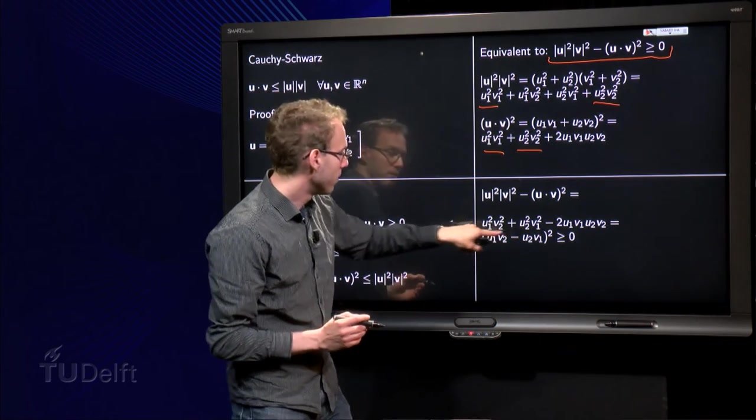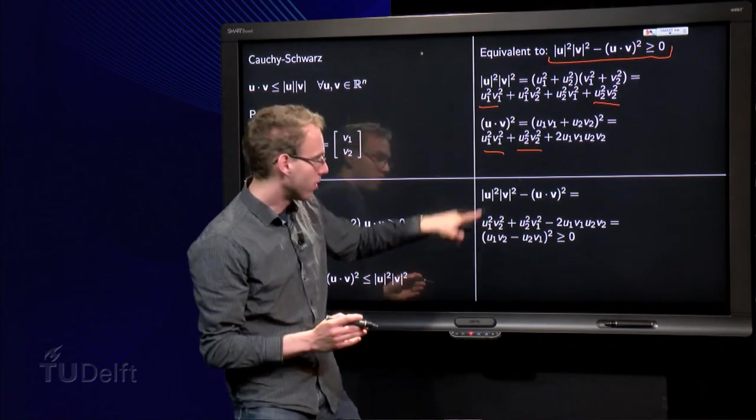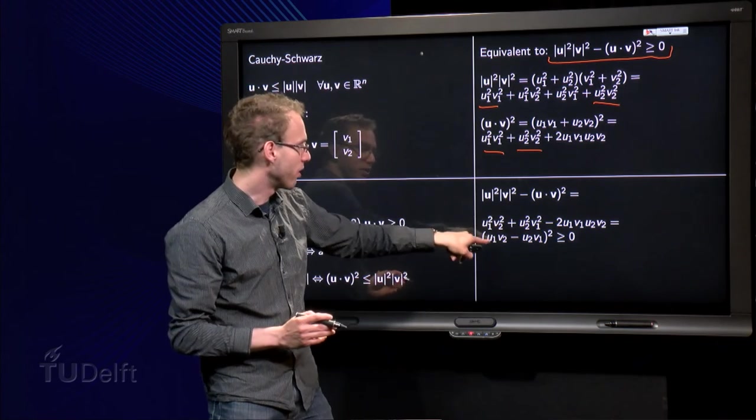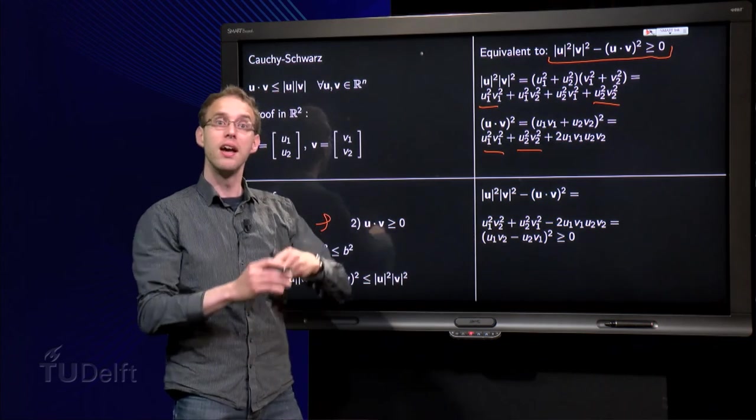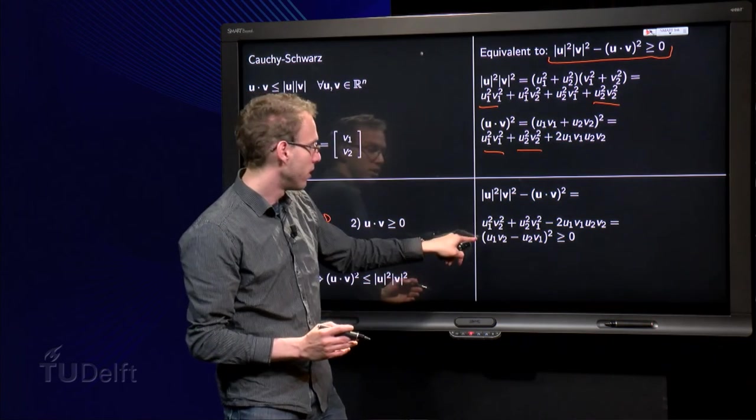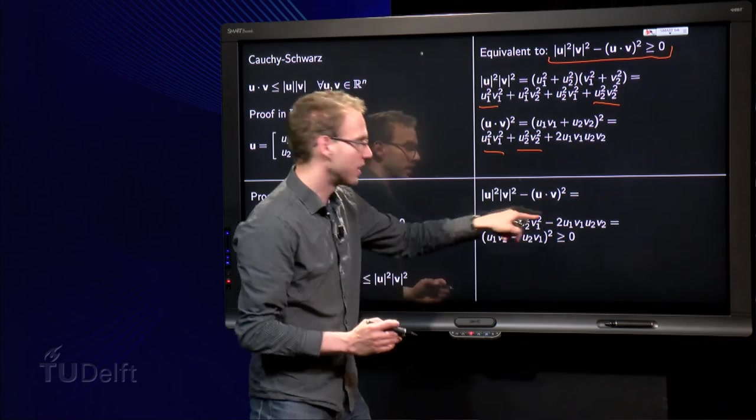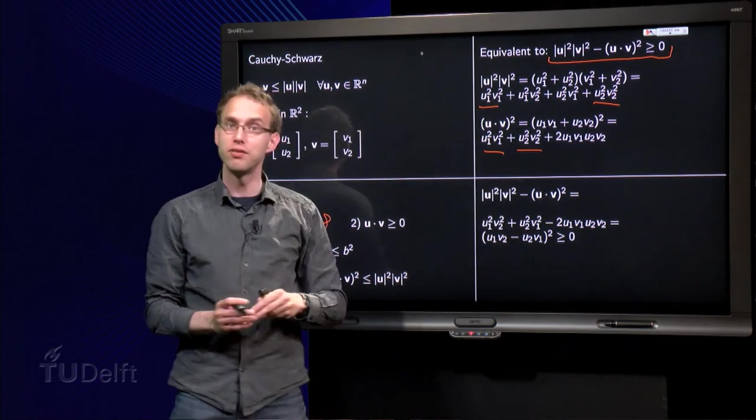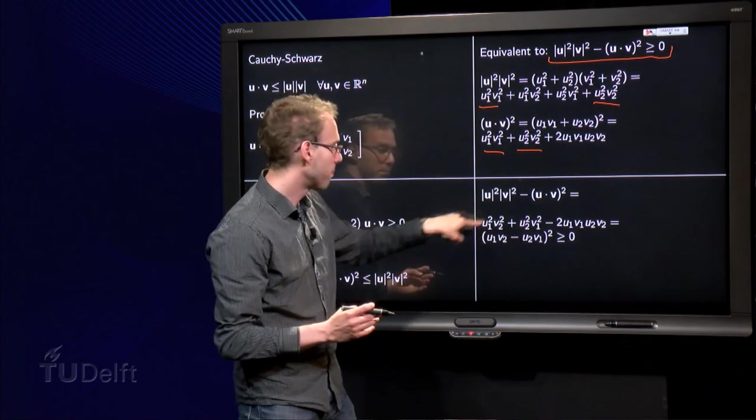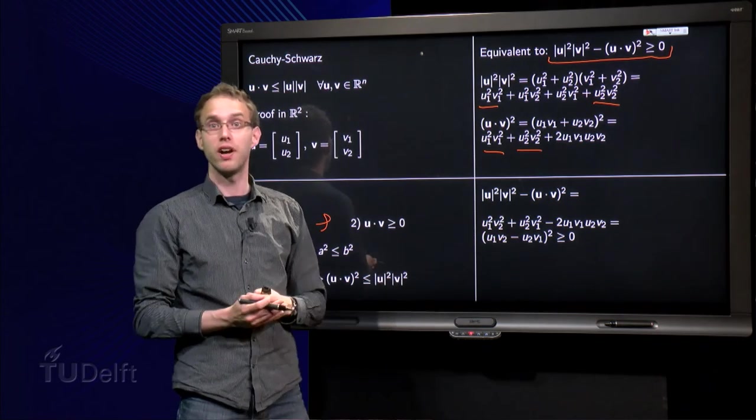If you work out the brackets and go backwards, then you get u₁²v₂², this term over here, plus u₂²v₁², that term over here, minus the double product 2u₁v₂u₂v₁, which is exactly this term over here. So you see this combination of terms is in fact a square. And we know that squares are always positive.